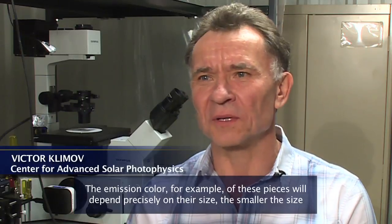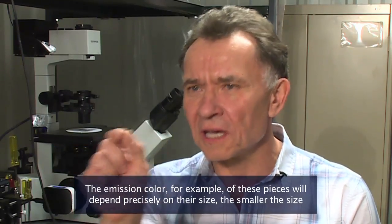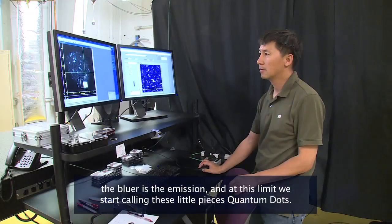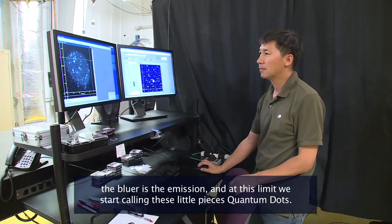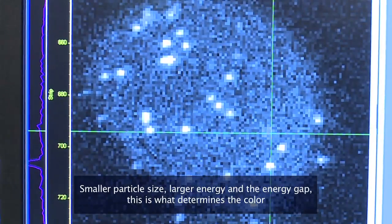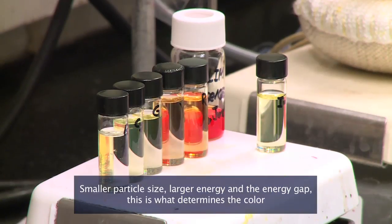The emission color, for example, of these pieces will depend precisely on their size. The smaller the size, the bluer is the emission. And at this limit, we start calling these little pieces quantum dots. Smaller particle size, larger energy, and the energy gap is what determines the color.